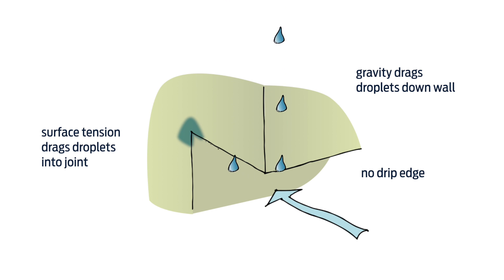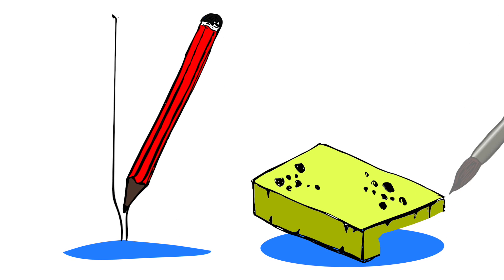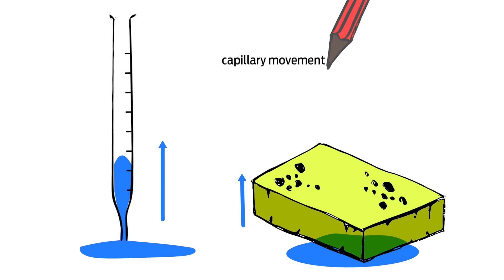But water can move against gravity. Surface tension on water drops and their attraction to a material surface can lift them up. This capillary movement can occur in various building materials and tight joints, just as in a sponge or a pipette.